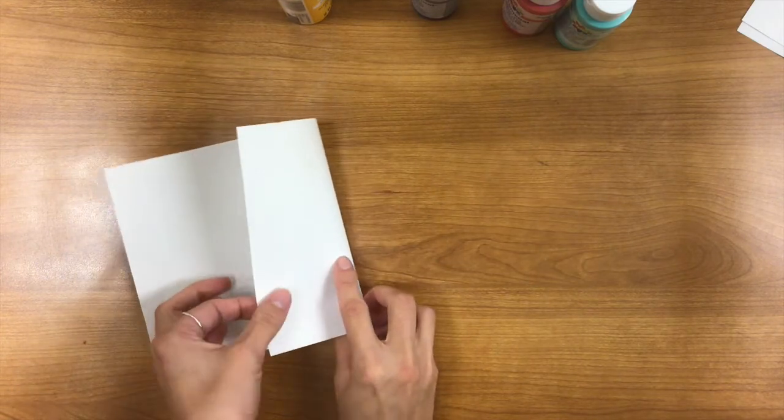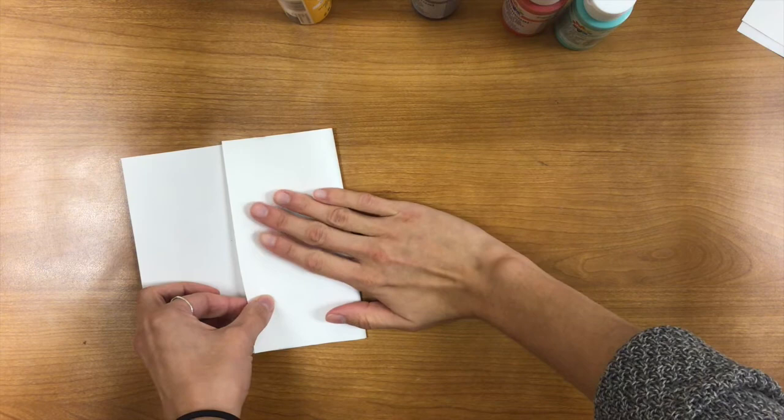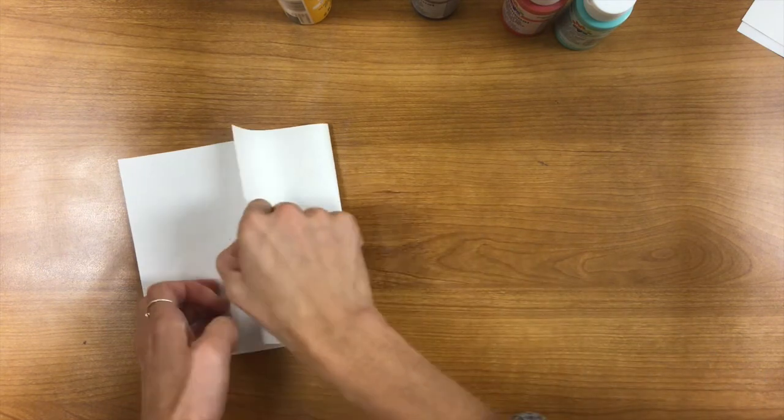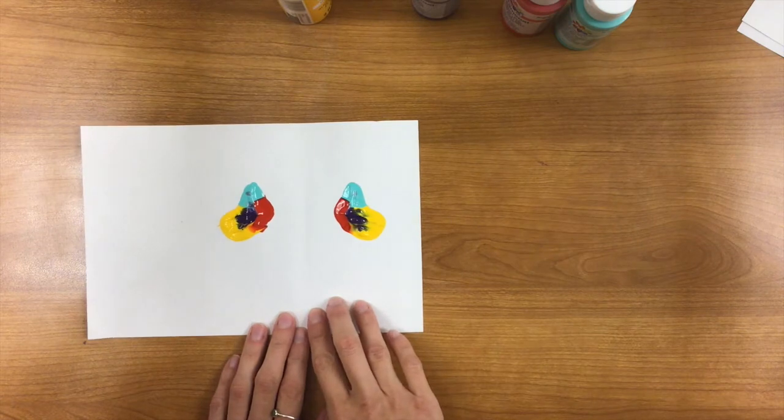So I would take this and very gently, just until you barely feel that paint, and then peel it open. Now you've got your two blobs. I would maybe fold it a little closer to the paint blob just so you don't have this huge gap.